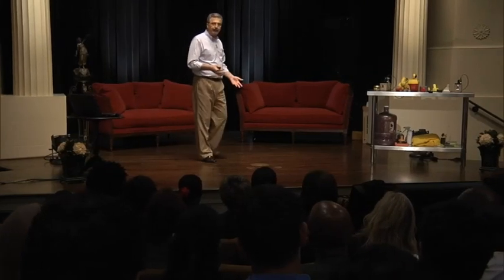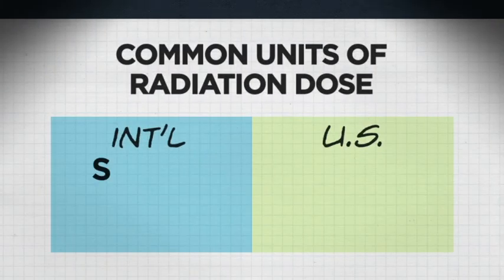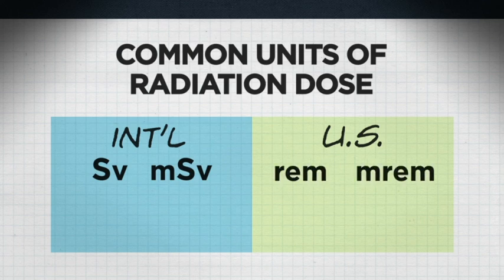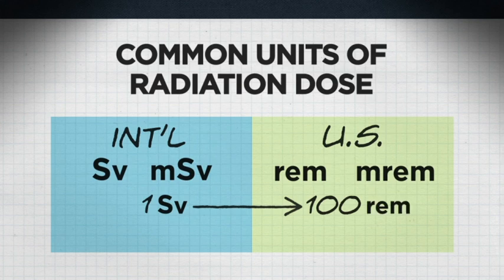We express ambient radiation levels per hour. For example, if radiation levels are one millisievert per hour and I stand there for two hours, I receive approximately two millisieverts of dose. Millisieverts is a common unit — recall that natural background radiation gives us about three millisieverts per year on average. In the United States, we use rem and millirem as dose units. The conversion is simple: one sievert equals 100 rem, and one rem equals 10 millisieverts.